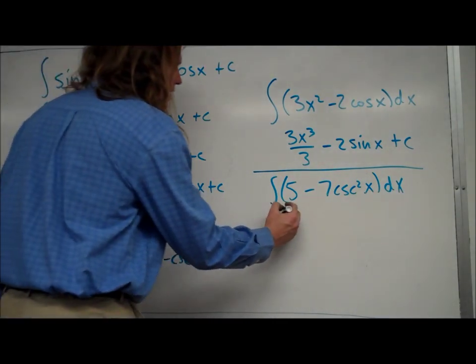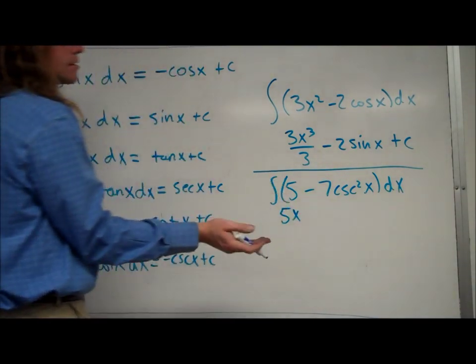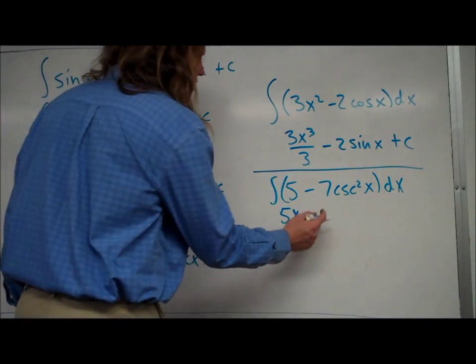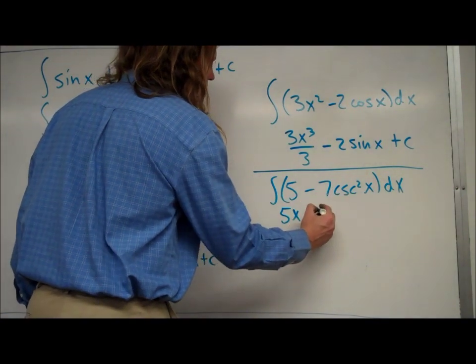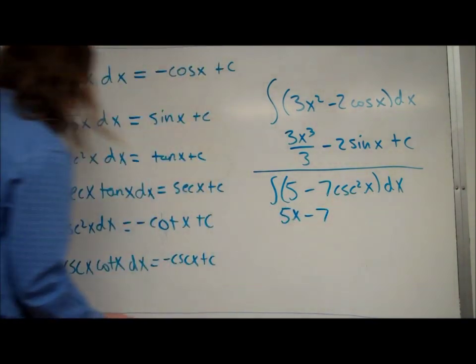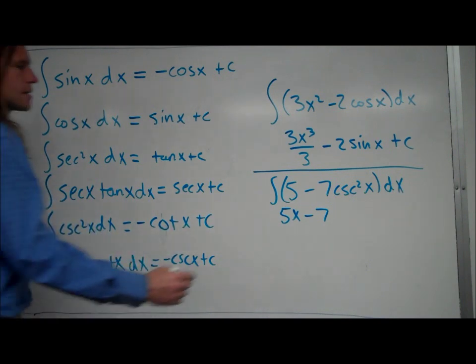The antiderivative of 5 is going to be 5x, because any constant, when you take the antiderivative, you just add the x with it. So then this constant, negative 7, that goes along for the ride.